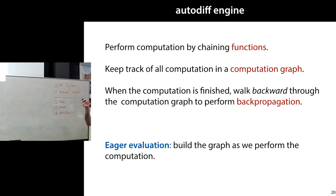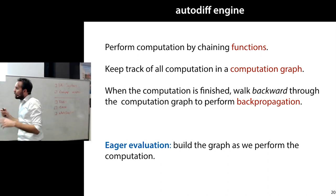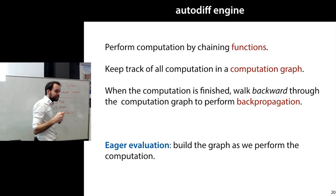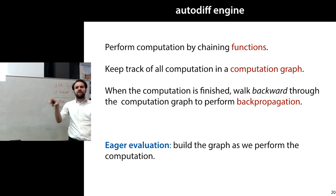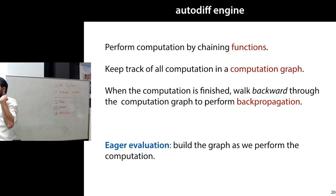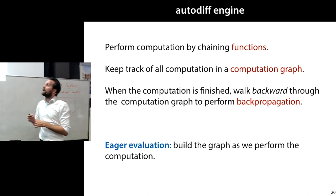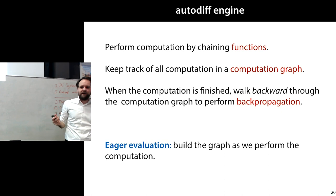An automatic differentiation engine performs computations by chaining functions, keeps track of all of them in a computation graph, and when the computation is finished walks backwards through the graph to perform backpropagation. The way we do this is called eager evaluation — we apply a function to tensors, immediately evaluate the outcome executing the forward pass, and remember the structure of the computation for later. That's by far the most popular way of doing this.